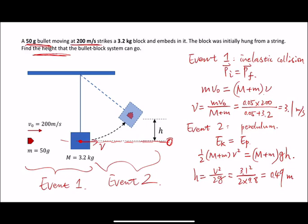So this is a very classic example that we can apply the conservation of momentum for event 1. And then we use the conservation of mechanical energy for event 2. Note that for event 1, this is an inelastic collision. So in this process, the mechanical energy is not conserved. This is important.